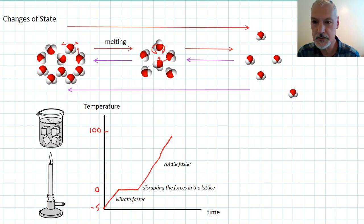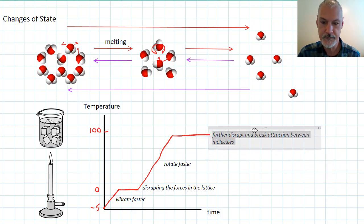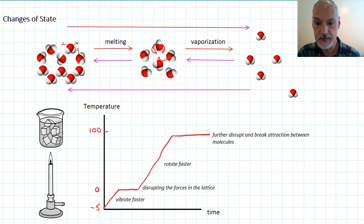Once we reach 100 degrees, additional energy is used to further break the bonds that exist between our particles. This then results in the formation of my vapor. And we call this stage vaporization.